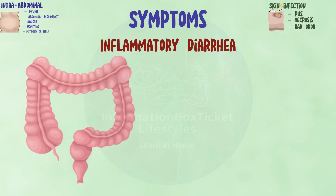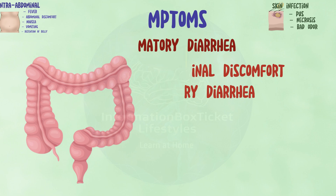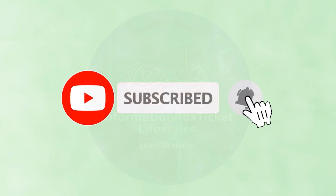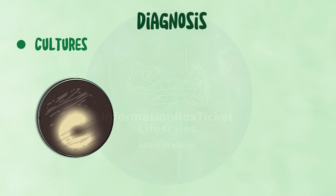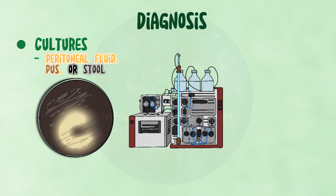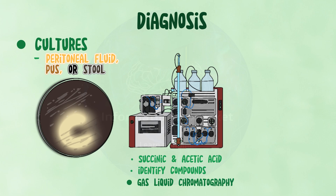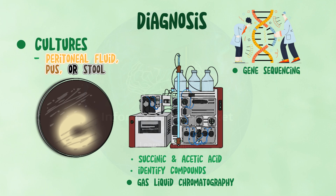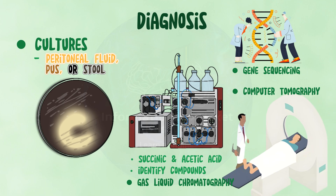Inflammatory diarrhea causes abdominal discomfort as well as watery diarrhea. Bacteroides fragilis is isolated in cultures from biological materials, such as peritoneal fluid, pus, or feces, to confirm the diagnosis. Bacteroides fragilis produces particular chemicals, such as acetic and succinic acid, which may be identified via gas-liquid chromatography, a procedure that examines vaporized substances. Gene sequencing may also be used to identify microorganisms. A computed tomography scan can reveal abscesses or the presence of gas at the affected spot.